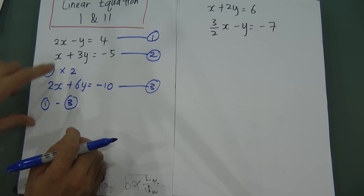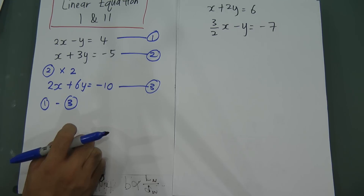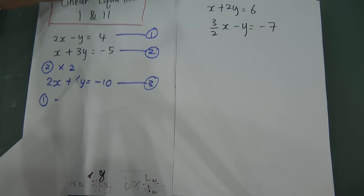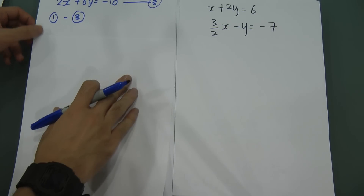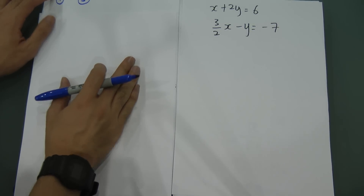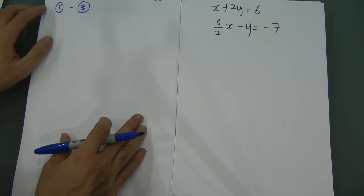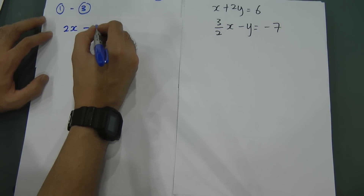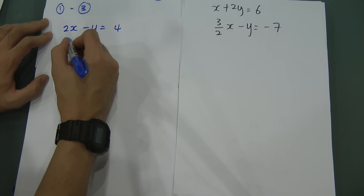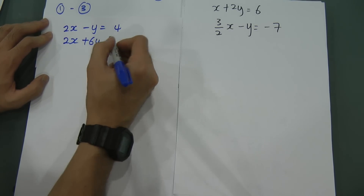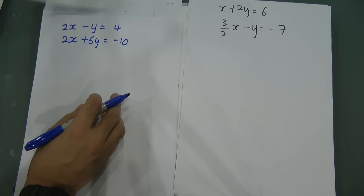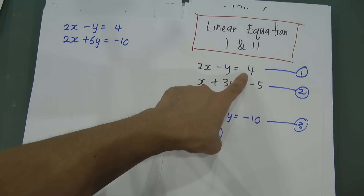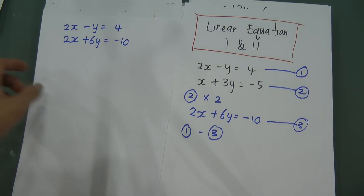To make this easy to understand, I write it out in detail. Equation 1 minus equation 3: the first equation is 2x minus y equal to 4, and the third equation is 2x plus 6y equal to negative 10. I just copy both here so you can see clearly.